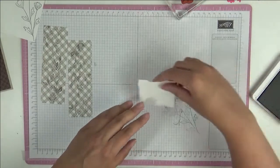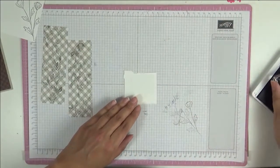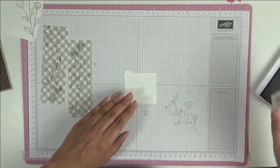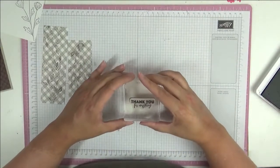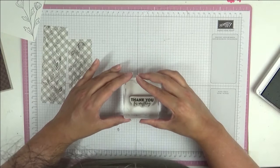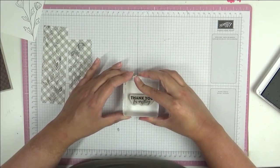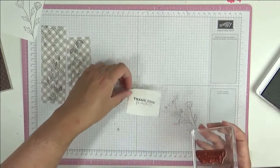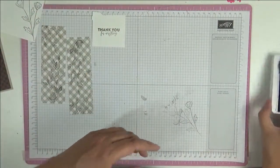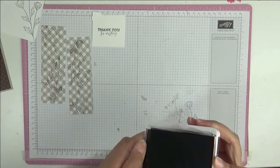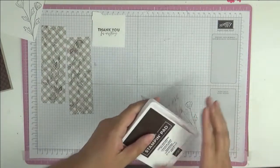And then I have a little scrap here of basic white again, and we're going to stamp our sentiment in the middle somewhere, and then we're just going to cut it out freehand. So there's our sentiment. I'm going to close my ink pad because we've finished with that now.